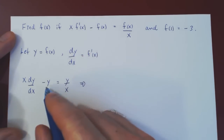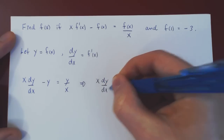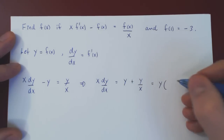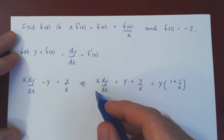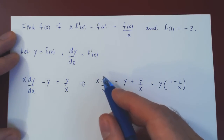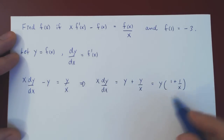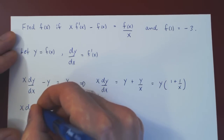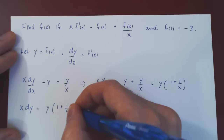The next step is to add y on both sides, giving x dy/dx equals y plus y over x. We can factor y, which gives y times (1 plus 1 over x). Thinking of dy as an infinitesimal change in y and dx as an infinitesimal change in x, we multiply both sides by dx: x dy equals y times (1 plus 1/x) dx.